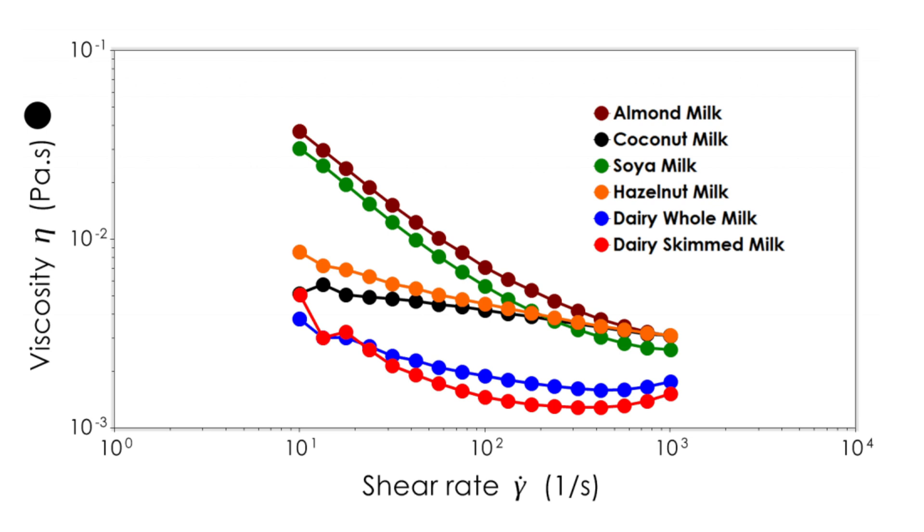Looking at the data, both almond and soya milk are more viscous than coconut, hazelnut, full-fat, and semi-skim milks at low shear rates.